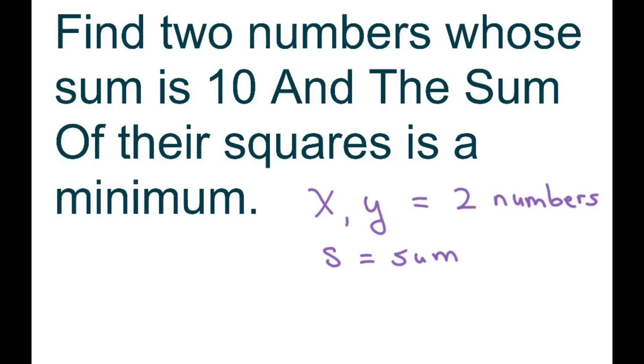Hi everyone. We're going to find two numbers whose sum is 10 and the sum of their squares is a minimum.